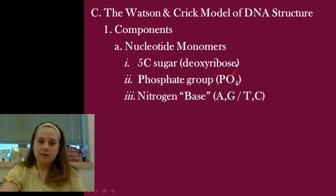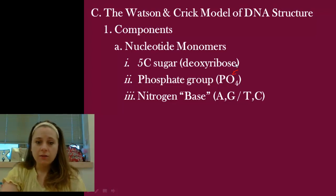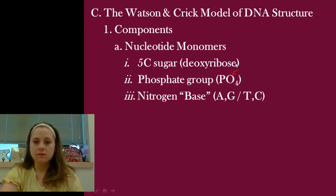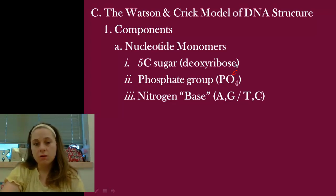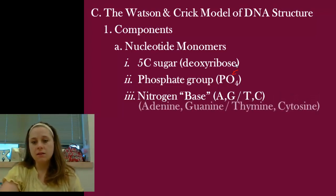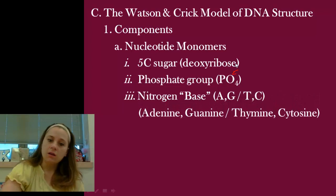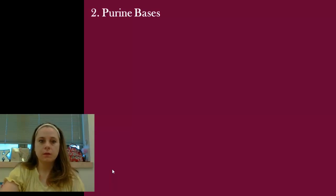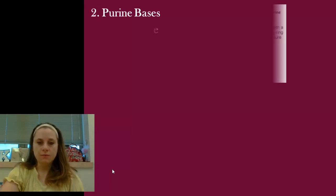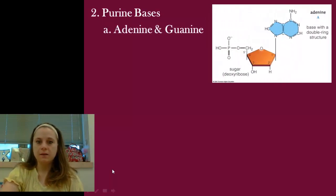DNA also has a nitrogen base, and for DNA there are four: adenine, guanine, thymine, and cytosine. Adenine and guanine are our purines; thymine and cytosine are the pyrimidines. A purine always binds to a pyrimidine.